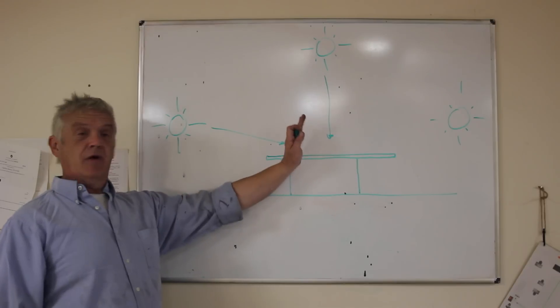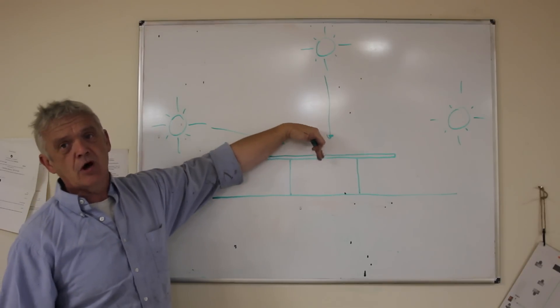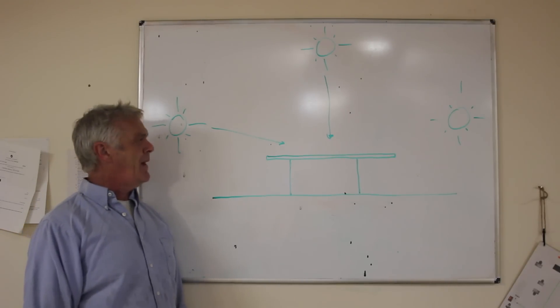Main thing people do is tilt the panel and then follow the sun with the tilted panel and that's what solar tracking is all about.